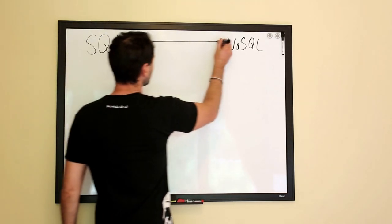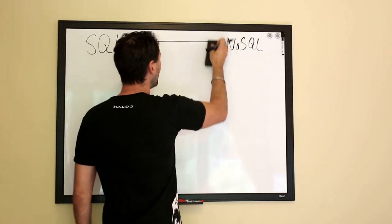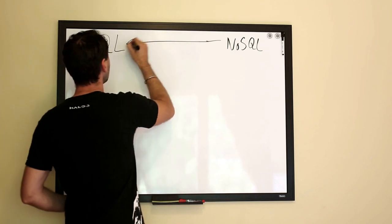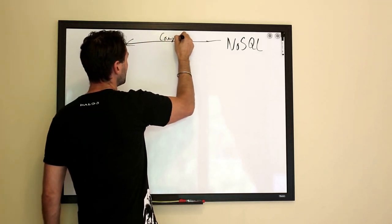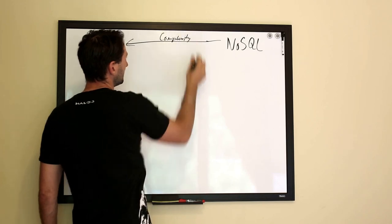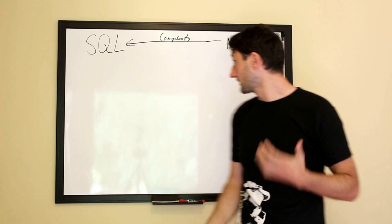That's how I like to think of this. You get more benefits on the left, but it costs you. This is complexity—simple on the right and more complex on the left, which can be what you need.